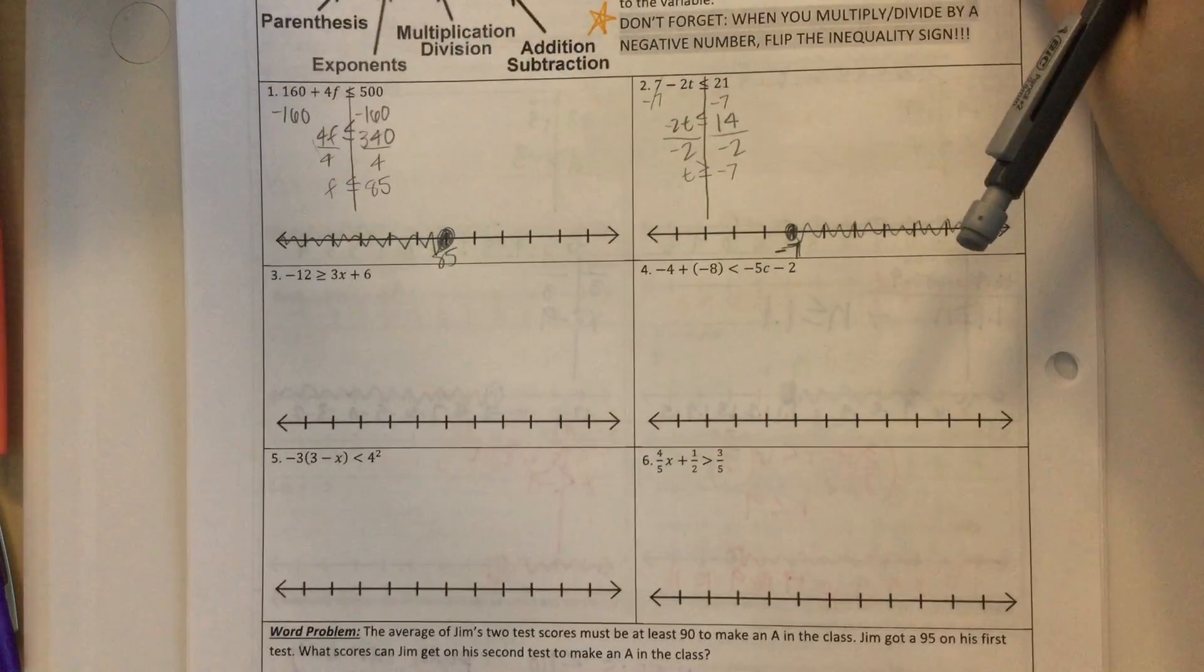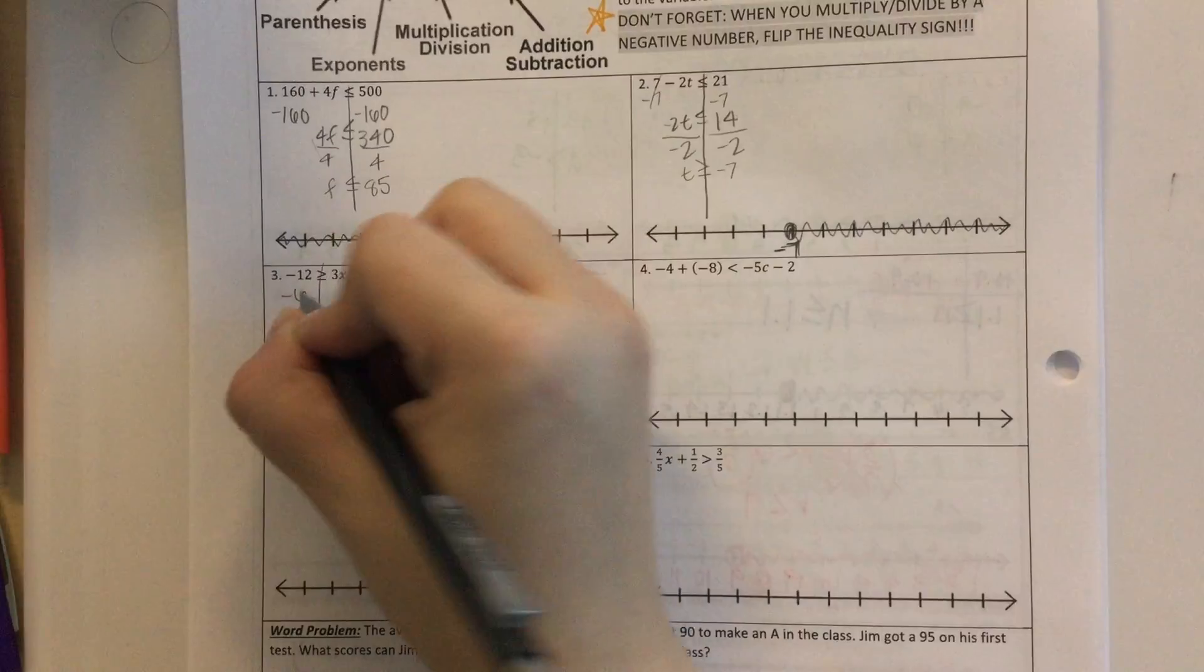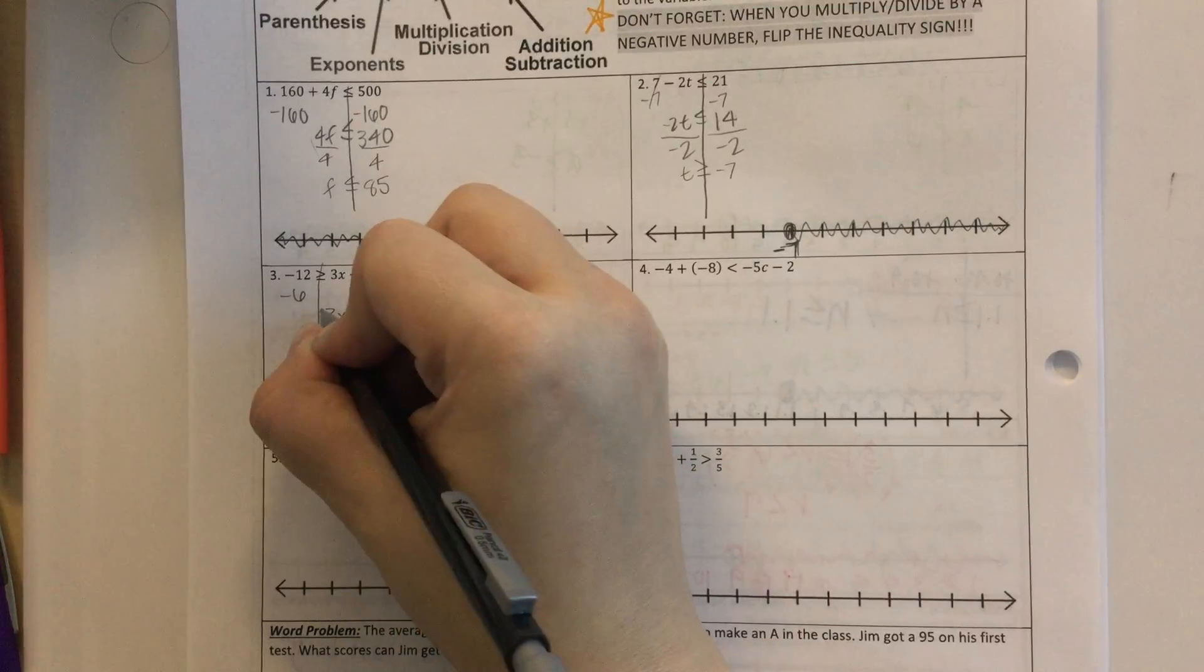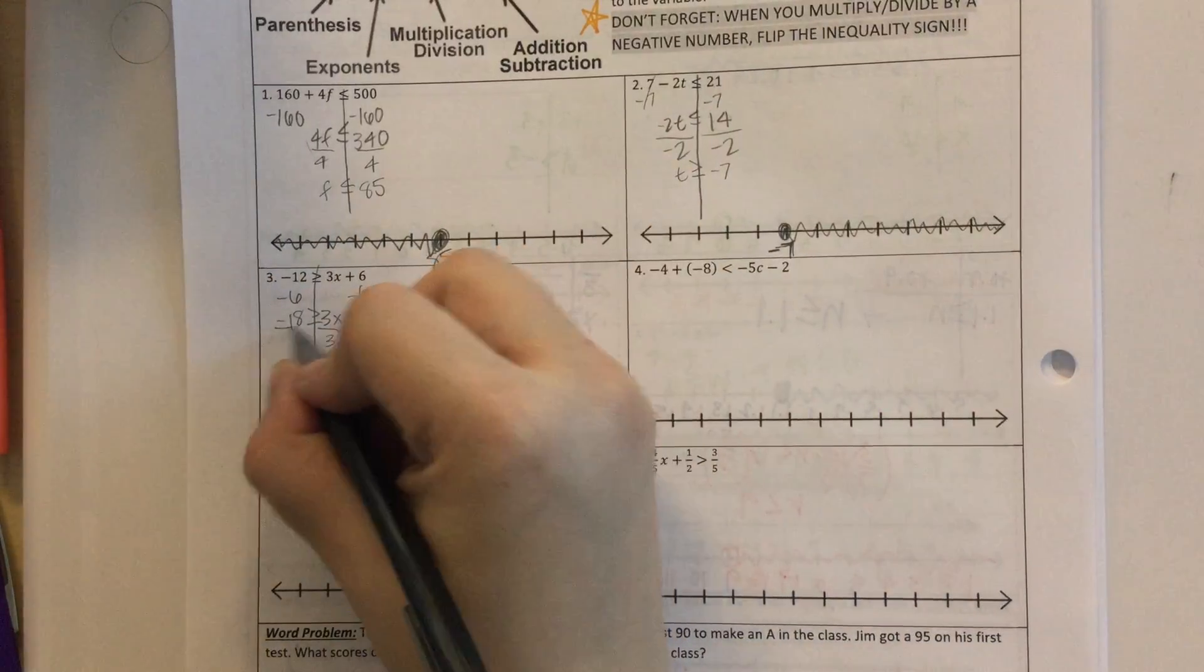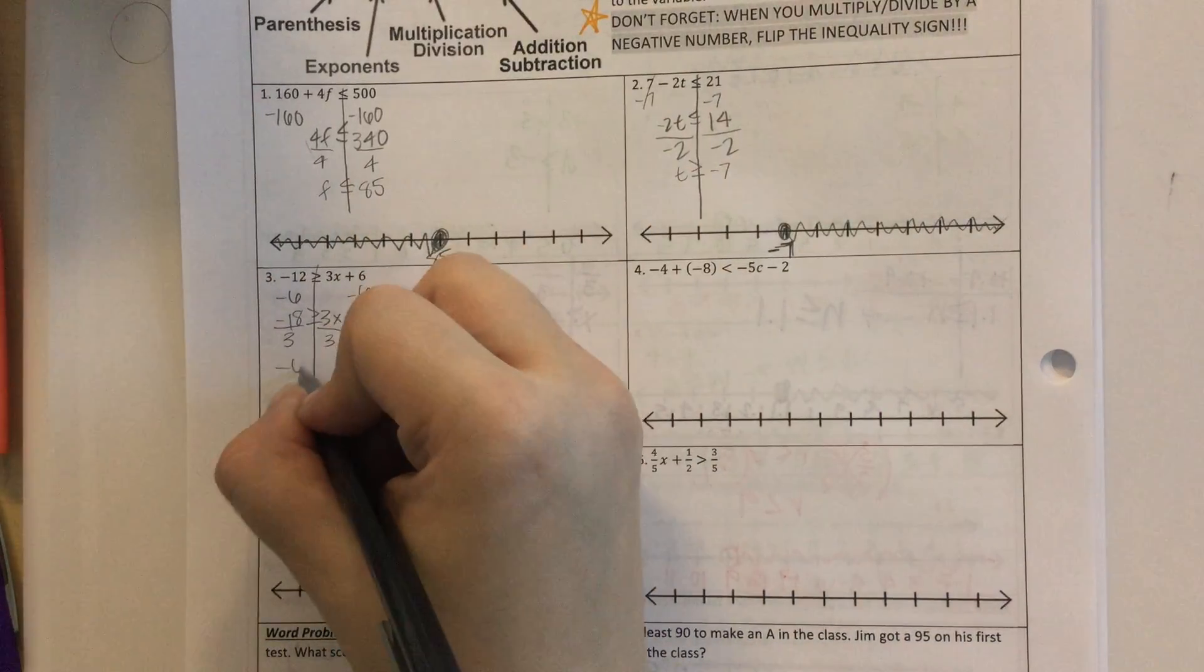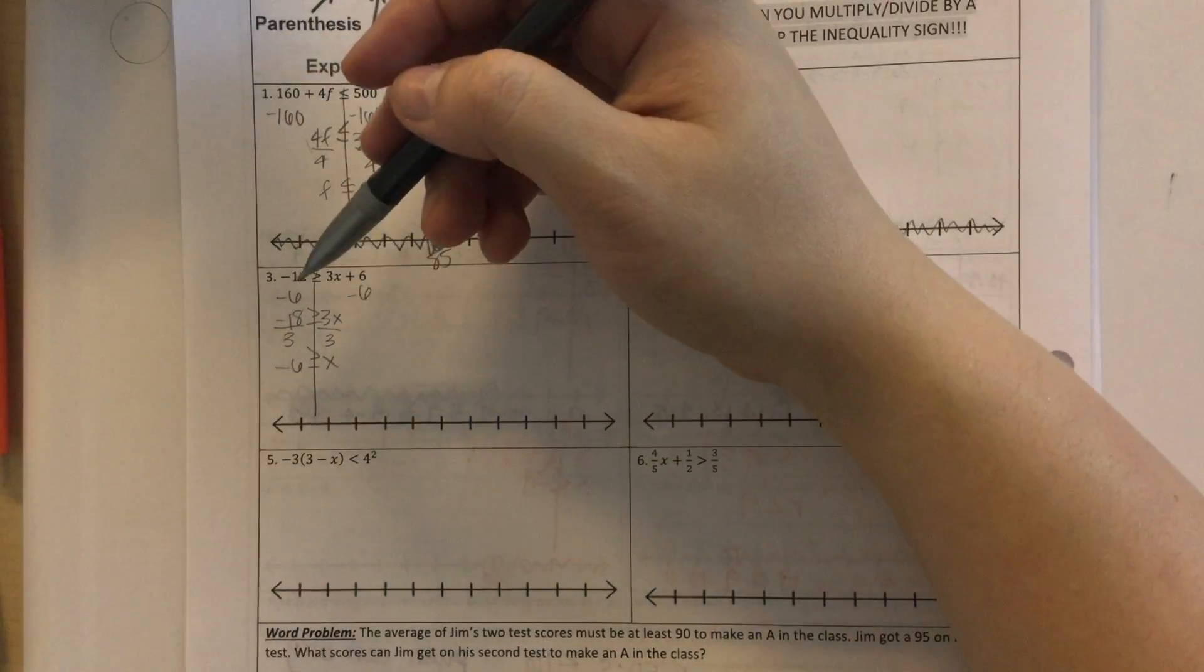Okay, number 3. I'm going to subtract 6. So I get 3X less than or equal to negative 18. Divide by 3. So I get negative 6. Okay, my answer is negative.